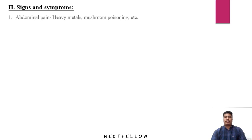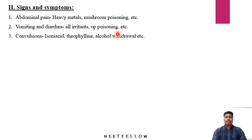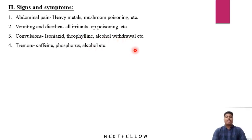The very common symptom of poisoning is abdominal pain, seen mainly in heavy metal and mushroom poisoning. The second is vomiting and diarrhea — all irritants cause these, and they are also seen in organophosphorus poisoning. The third is convulsions, seen in isoniazid poisoning, theophylline, alcohol withdrawal, and more. The fourth is tremors, seen in caffeine, phosphorus, alcohol, etc.